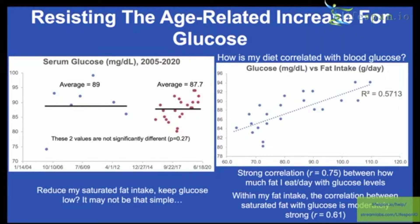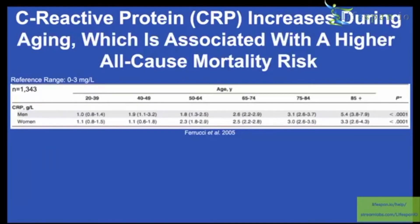The easy answer might be to keep blood glucose low by eating less saturated fat, but as we'll see, it may not be that simple. Moving forward, C-reactive protein also increases with aging, and higher levels are associated with higher all-cause mortality risk.